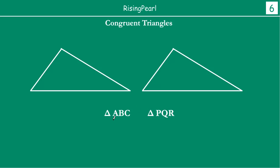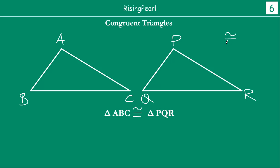We write this using a sign: triangle ABC is congruent to triangle PQR. The congruency sign is like a similar sign — a tilde — with an equal sign below it. So this combined symbol is the sign for congruent. When we write triangle ABC is congruent to triangle PQR, it means the triangles will exactly cover each other.